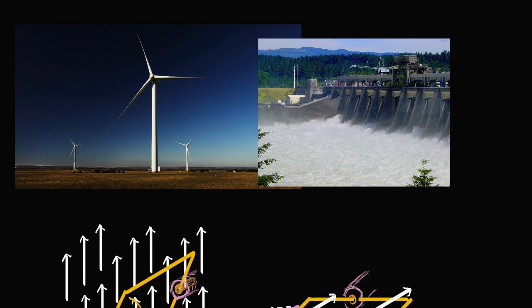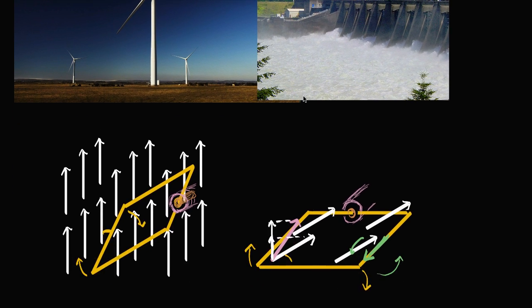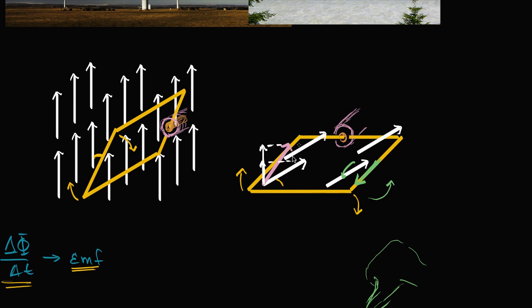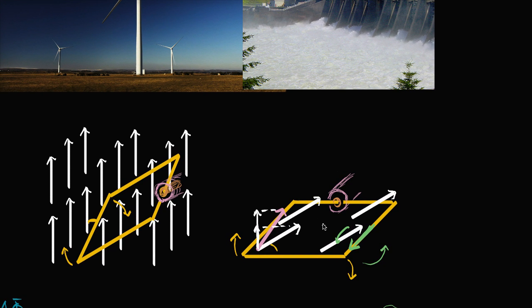This is what happens with windmills and hydroelectric generators. With a windmill, wind causes the blades to turn, and inside there's a more sophisticated version of this rotating loop that induces a current. With hydroelectric generators, you use the potential energy of flowing water to turn an axle, generating electricity by the exact same principle — it's just Faraday's law at work.